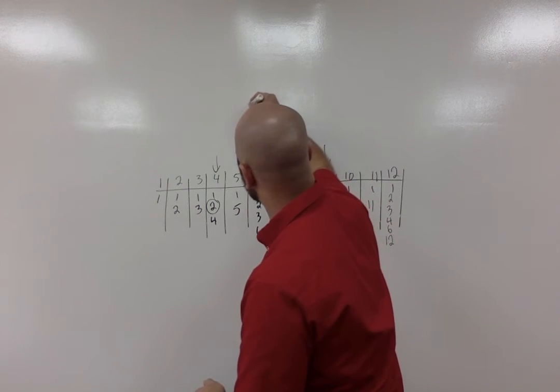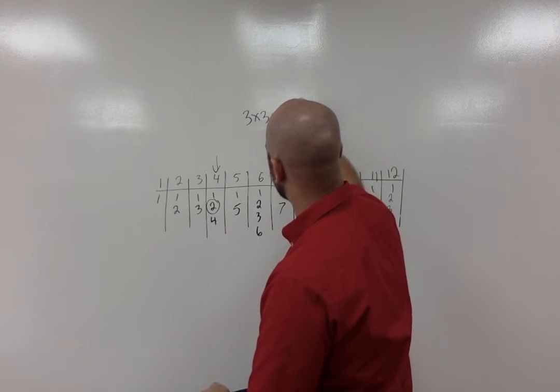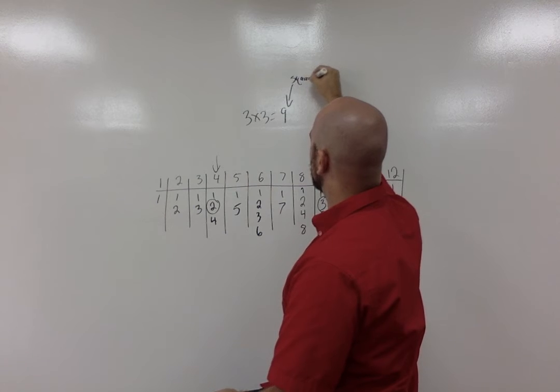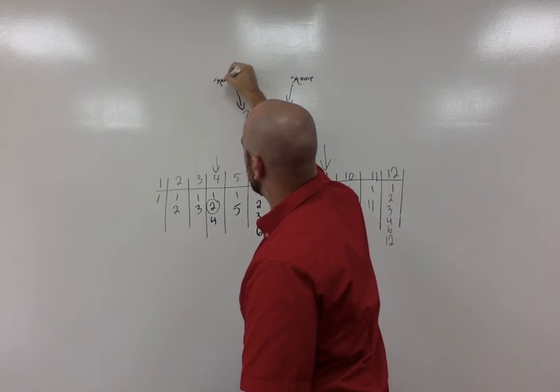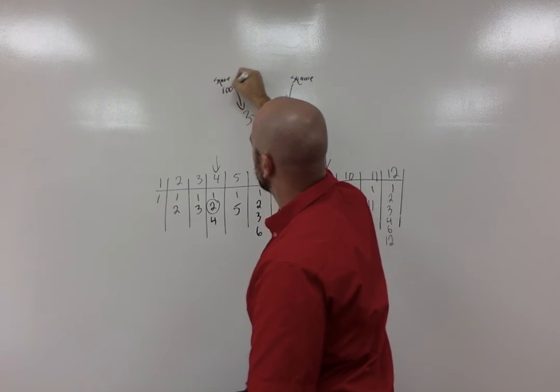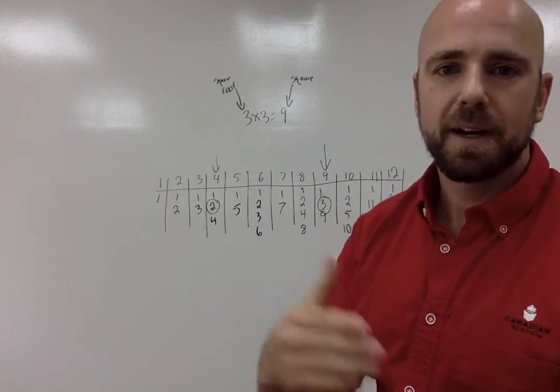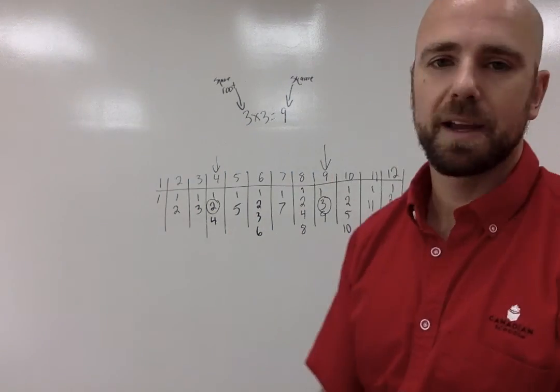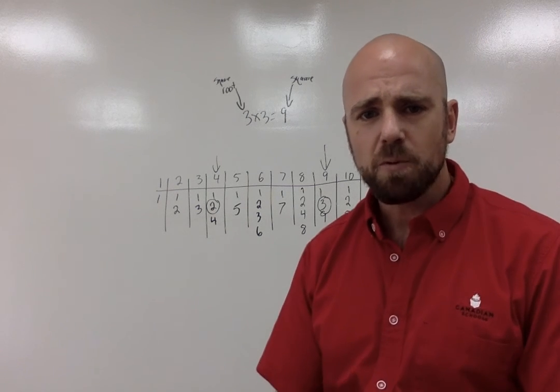So basically what we're saying is if we have, for example, three times three equals nine, this becomes our square and this number becomes our square root. Three becomes our square root. So three times itself is our square root, whereas nine becomes our square. So this is kind of what we're playing around with.